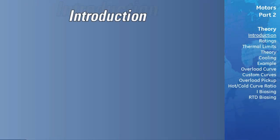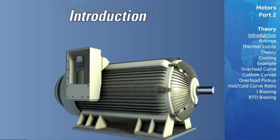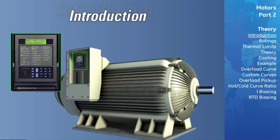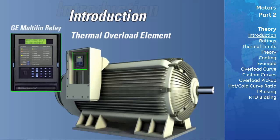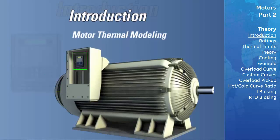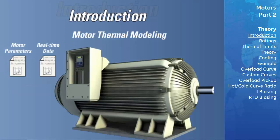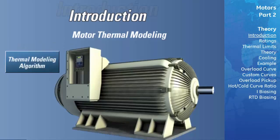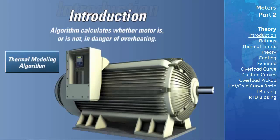Motor Thermal Modeling. The primary motor protective element within a motor protective relay is the thermal overload element, and within GE Multilin Relays, this is accomplished through motor thermal modeling. The thermal model uses motor parameters supplied by the manufacturer in addition to real-time data, such as motor current, as inputs to a thermal modeling algorithm. The algorithm then calculates whether the motor is or is not in danger of being overheated.